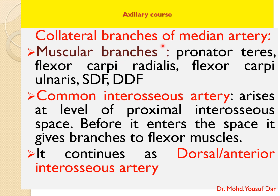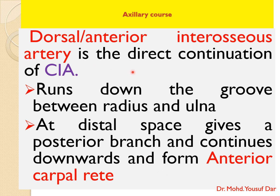The first collateral branch arising from the median artery is the common interosseous artery. It arises at the level of the proximal interosseous surface and gives branches to the flexor muscles. It then passes through and continues as the dorsal or anterior interosseous artery, which is the direct continuation of the common interosseous artery and gives branches to the extensor group of muscles of the forearm, running down the groove between the radius and ulna.